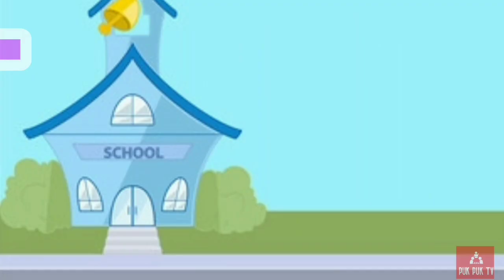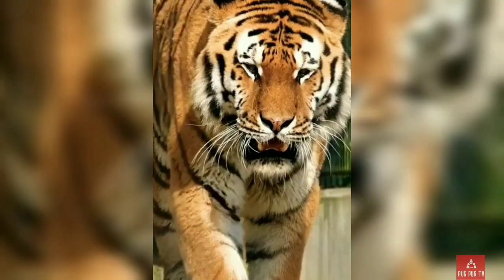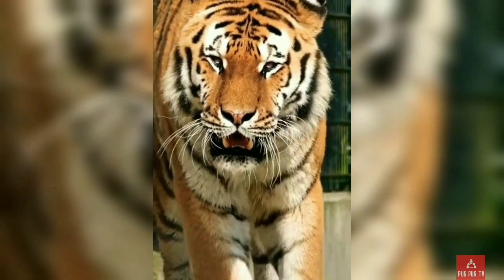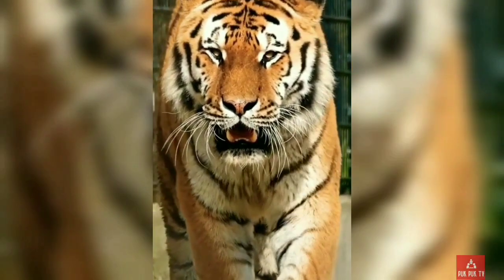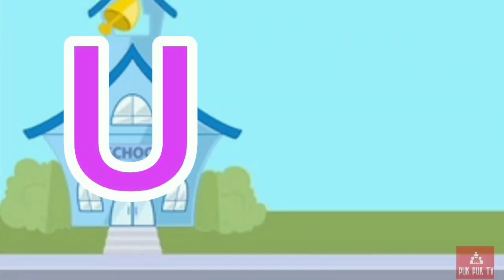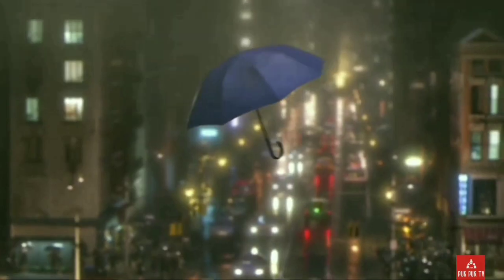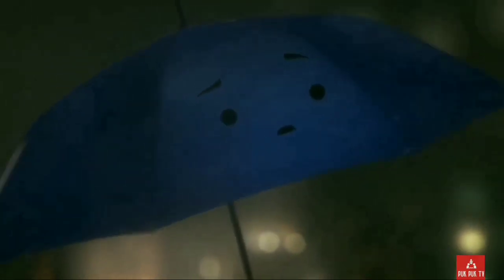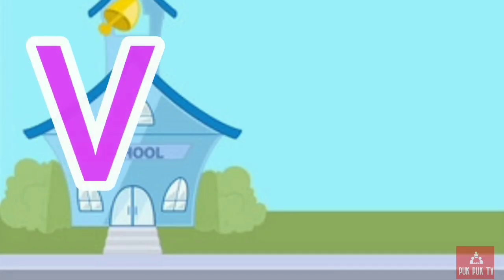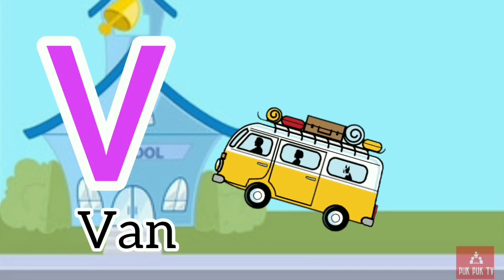T for tiger. U. U for umbrella. V. V for van.